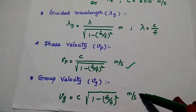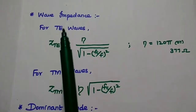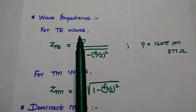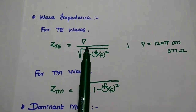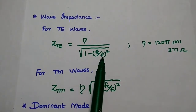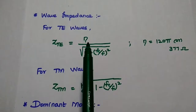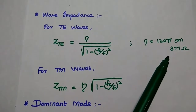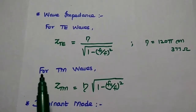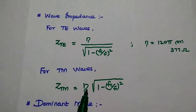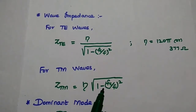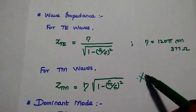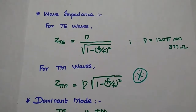We are going to find all these characteristic values. The next important formula is wave impedance. For TE (transverse electric) waves, the wave impedance equals eta divided by the square root of 1 minus (f_c/f)², where eta is the characteristic impedance with a value of approximately 120·pi or 377 ohms. For TM waves, the impedance is eta multiplied by the square root of 1 minus (f_c/f)².